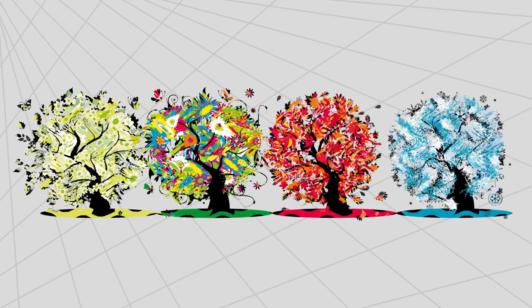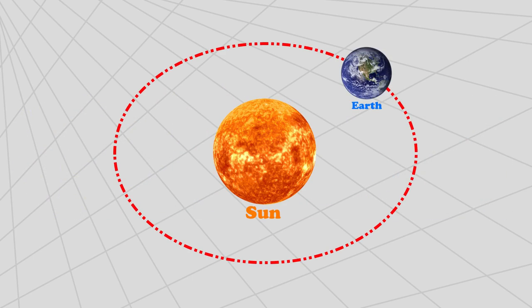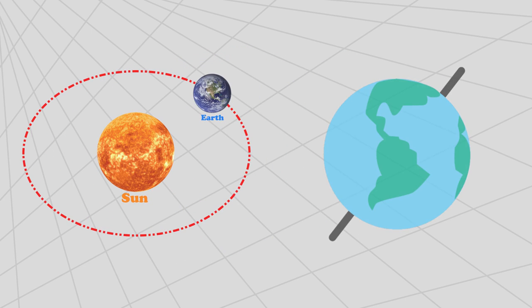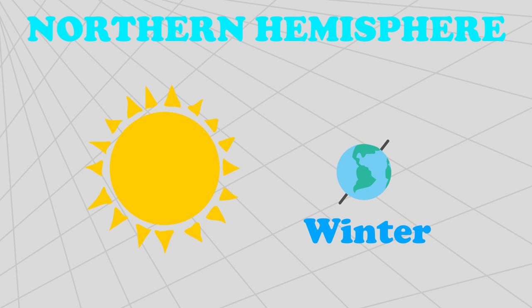You might wonder then why do we have different seasons. This is because the Earth moves along an elliptical orbit around the Sun. Also, the Earth's axis is tilted with respect to its orbital plane. For the northern hemisphere, when the Earth's axis points towards the Sun it is summer. When the Earth's axis points away from the Sun it is winter.